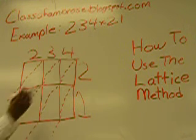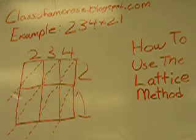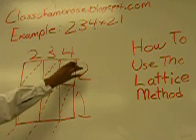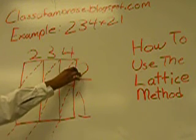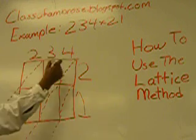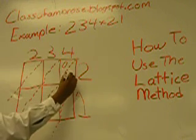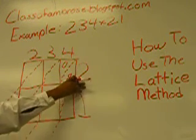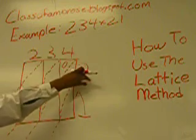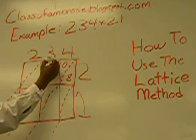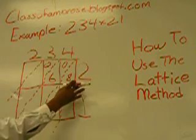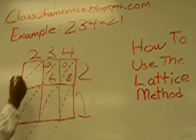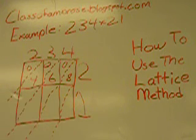Four times two equals eight, so zero up here and four down here. Three times three is six, so zero up here and six down here. Two times two is four, so zero up here and four down here.